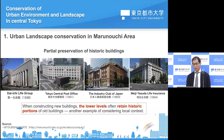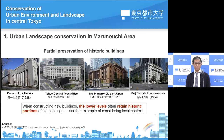When constructing new buildings, the lower level often retains the historical portion of old buildings. For example, the Daiichi Life Group building built in 1938 also has 31 meters. The Tokyo Central Post Office from 1931 also has a 31-meter height building with a new building constructed behind it. Similarly, buildings from 1920 and 1934 maintain the same 31-meter profile. They intentionally keep the old landscape and historical context — they conserve the landscape.